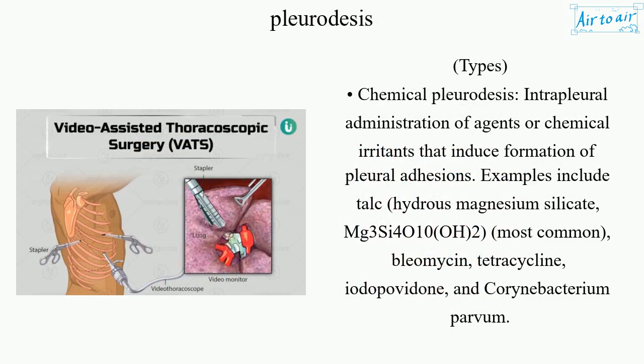Types. Chemical pleurodesis: intrapleural administration of agents or chemical irritants that induce formation of pleural adhesions. Examples include talc (hydrous magnesium silicate, Mg₃Si₄O₁₀(OH)₂ — most common), bleomycin, tetracycline, iodopovidone, and Corynebacterium parvum.